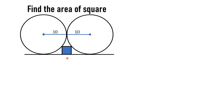Let's move towards the solution and make some modifications to the figure. First, we draw a line segment which is actually the side of the square, and let's say this length is equal to a — so the side length of the square is equal to a. Now we draw another line segment which is the radial line of a circle, having length equal to 10 units, and it meets one of the corners which is tangent to the circle.